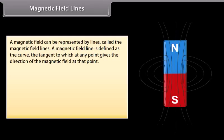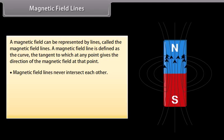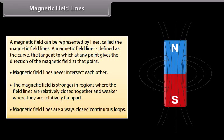Magnetic fields can be represented by lines. A magnetic field line is defined as the curve the tangent to which at any point gives the direction of the magnetic field at that point. Magnetic field lines never intersect each other. The magnetic field is stronger in regions where the field lines are relatively close together, and weaker where they are relatively far apart. Magnetic field lines are always closed continuous loops.